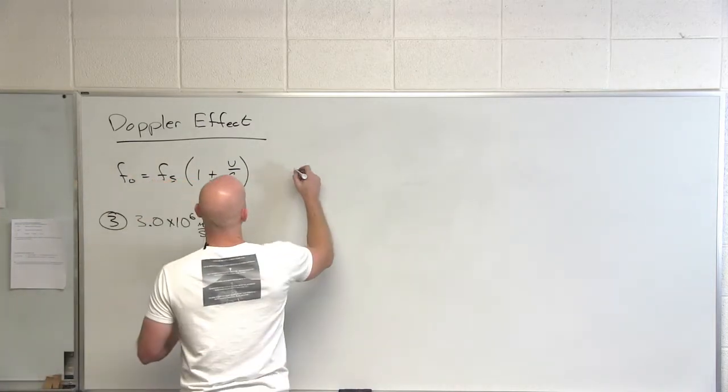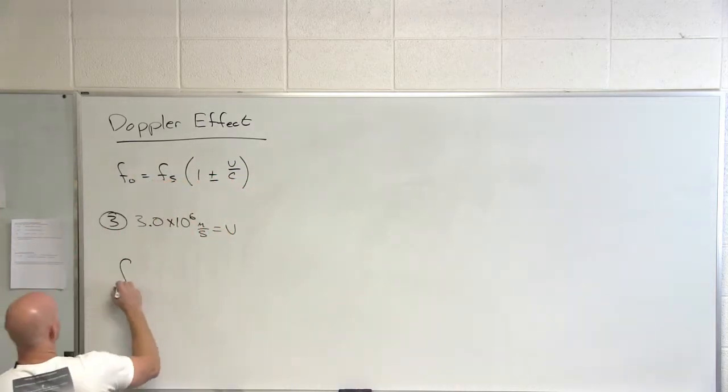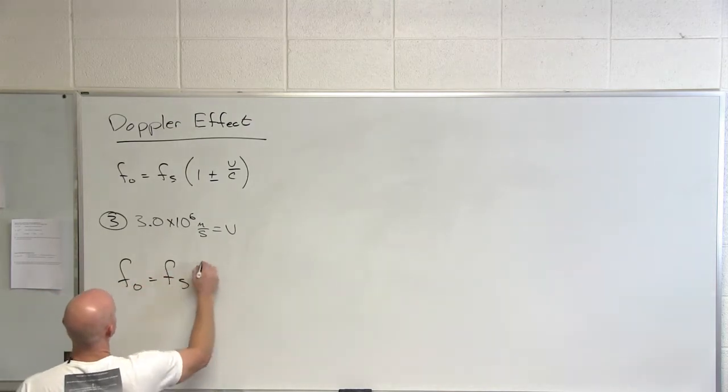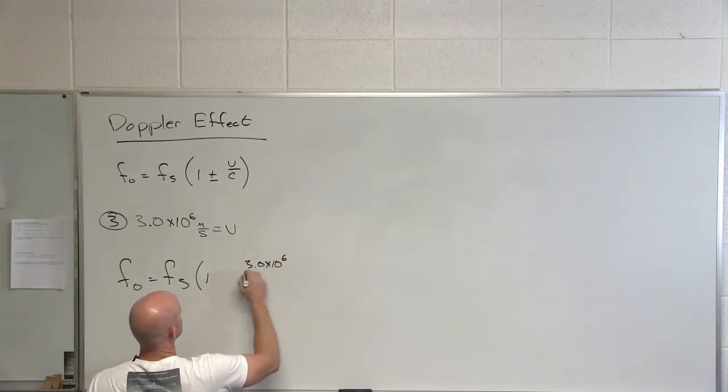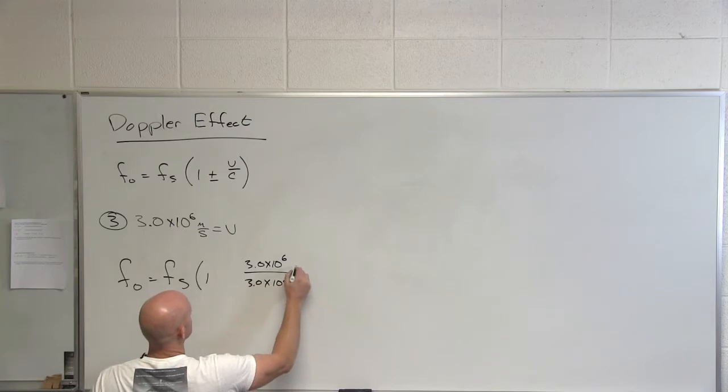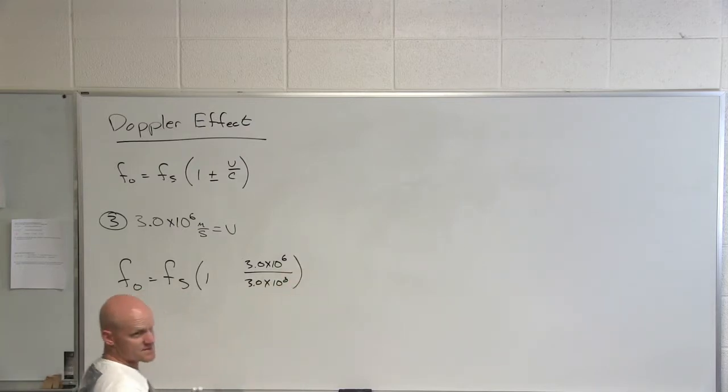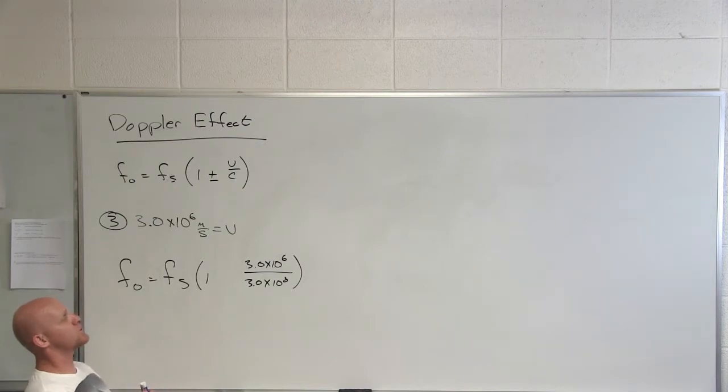And if you look at this equation, we got frequency observed equals the frequency of the source times one, we'll leave the sign out for a second, but 3.0 times 10 to the sixth over the speed of light, 3.0 times 10 to the eighth. And plus or minus depends on if the objects are moving towards each other or away from each other. So if they were moving towards each other, the frequency would go up and I need to add here so that the observed frequency would come out higher than the frequency emitted by the source.